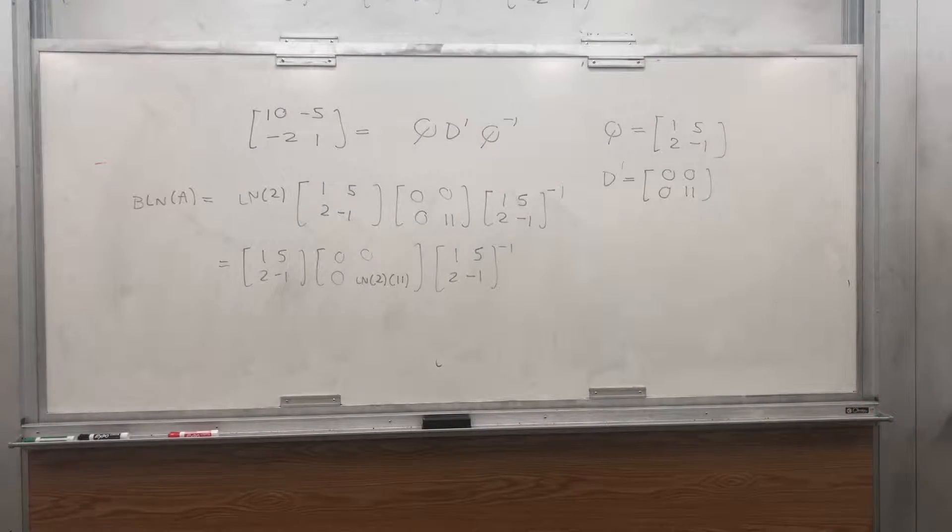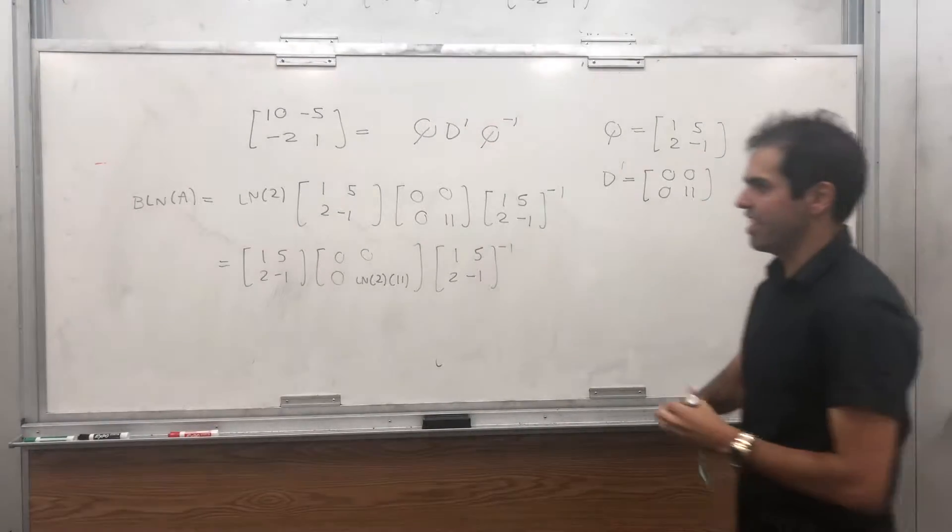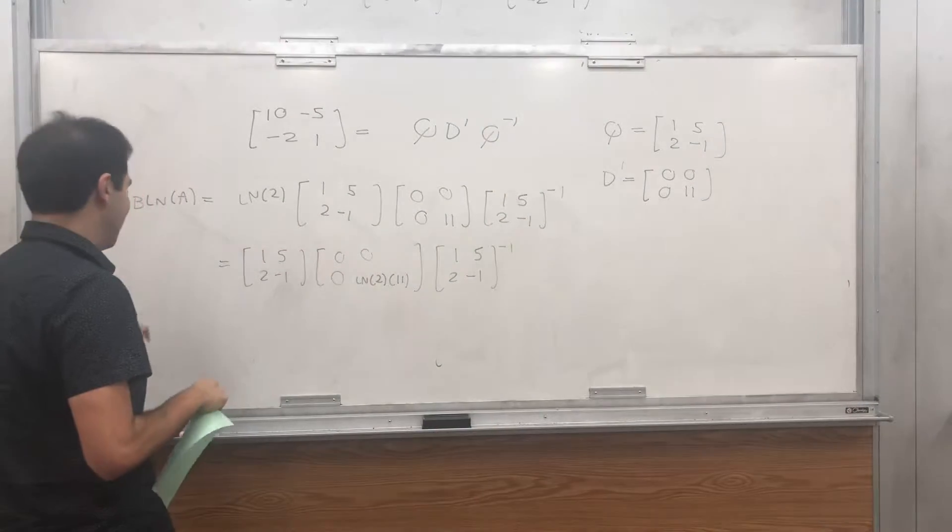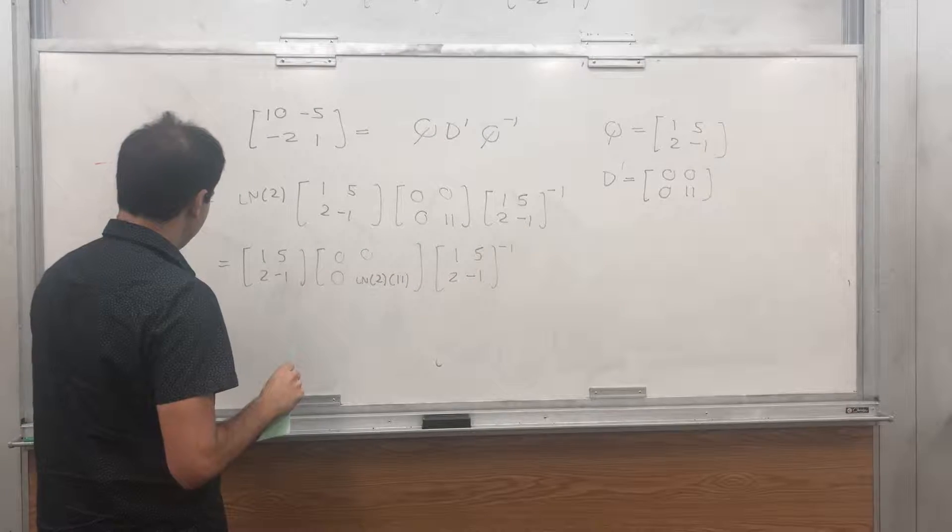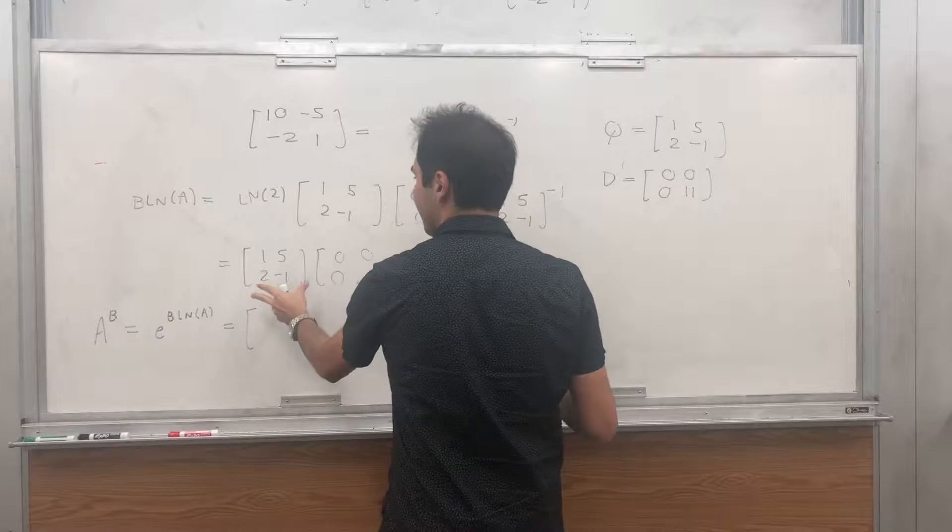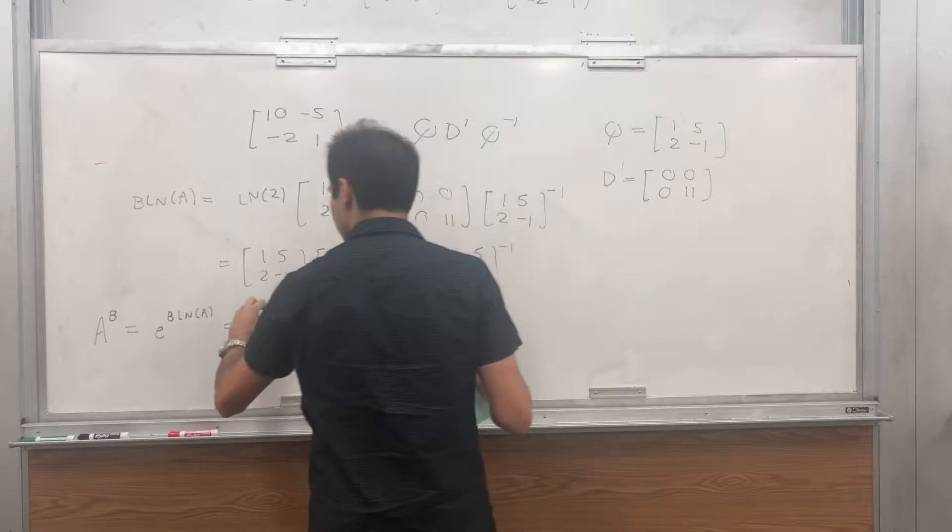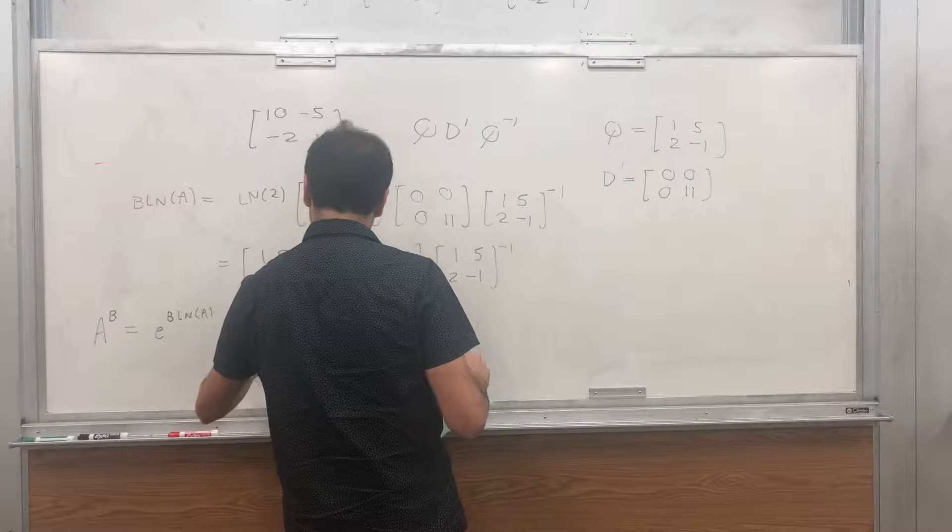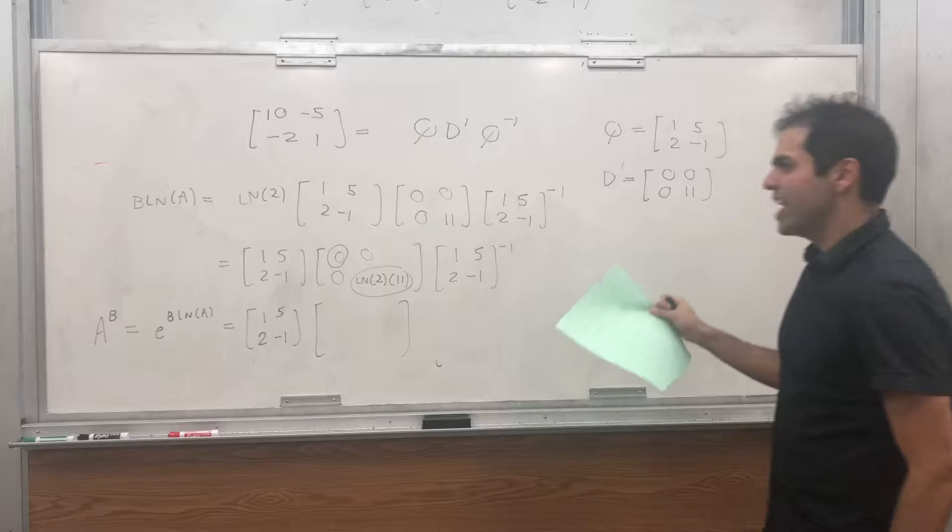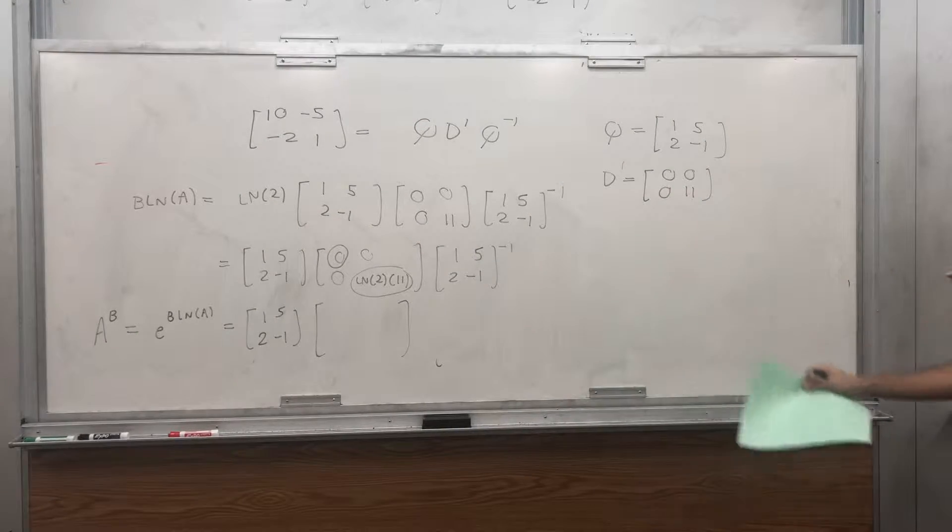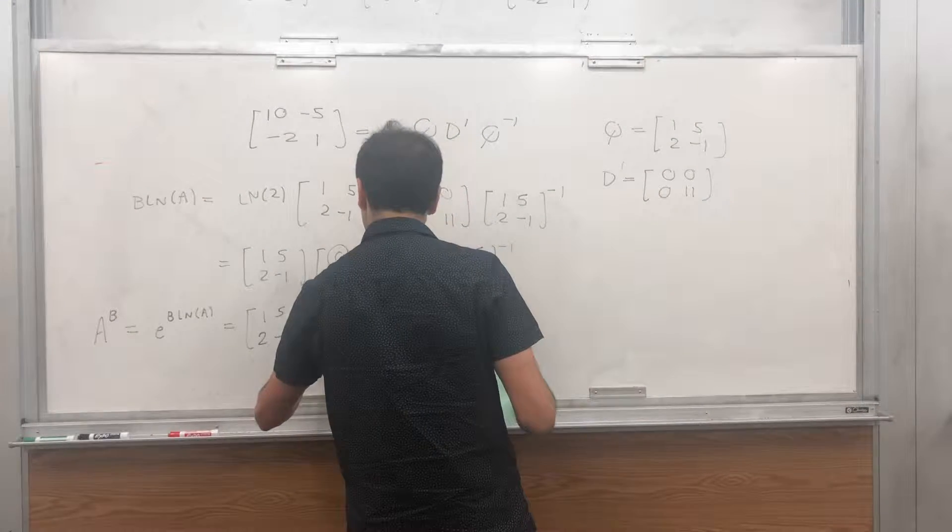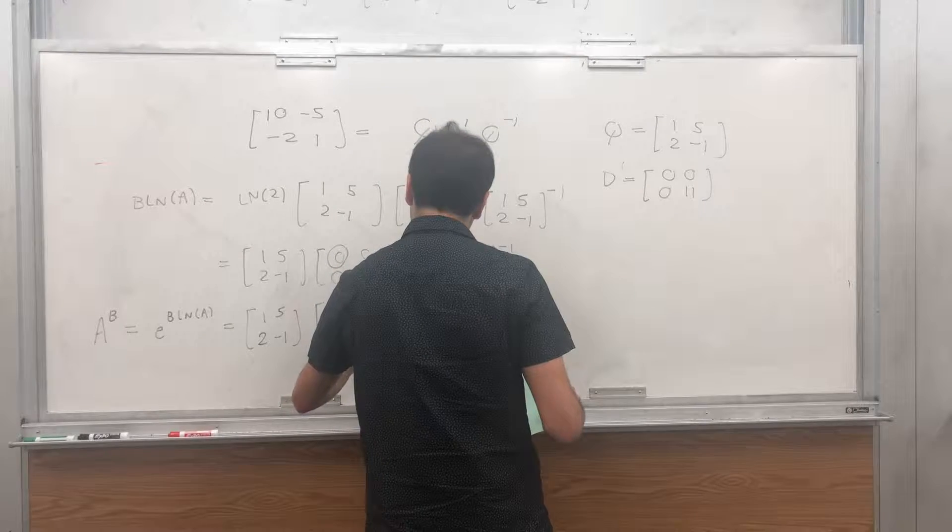Alright, and lastly, what is A to the B? You just exponentiate that, so, A to the B, using this definition, you get e to the B ln of A, and then you just, remember to find the exponential, it's like P, e to the D, P inverse, so, 1, 5, 2, minus 1. Now, and remember, this is a diagonal matrix, so, to exponentiate a diagonal matrix, you just exponentiate each diagonal, so, e to the 0, 0, 0, e to the ln of 2, times 11.